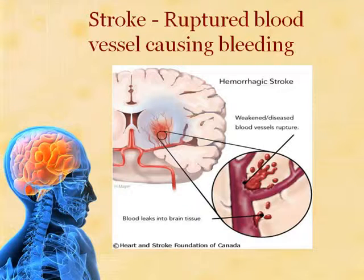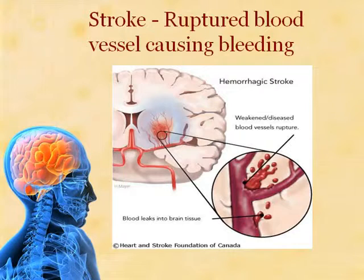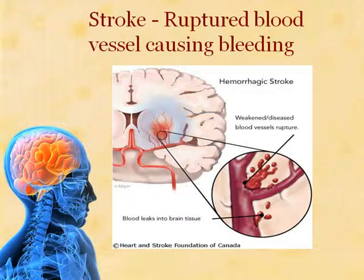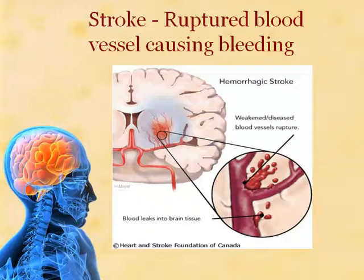This is a hemorrhagic stroke — when there is a ruptured blood vessel causing bleeding into the brain tissue. On the lower right-hand side, the blood vessel in magnified view shows a break in it, causing blood to leak out. That is a ruptured blood vessel. This blood is leaking into the brain tissue, and as the blood is not flowing through the vessels like it is supposed to, that portion of the brain tissue is not getting proper nourishment, leading to damage and subsequently destruction of the tissue.